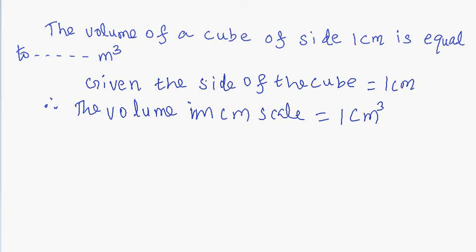We know that 100 centimeter is equal to 1 meter. That is, 10 to the power 2 centimeter is equal to 1 meter. Therefore, 1 centimeter is equal to 10 to the power of minus 2 meter.